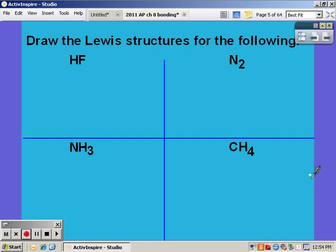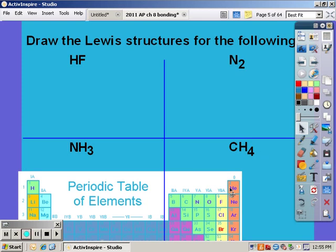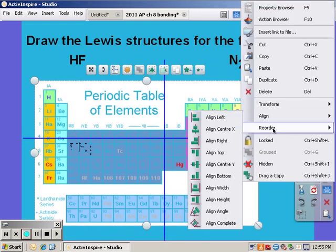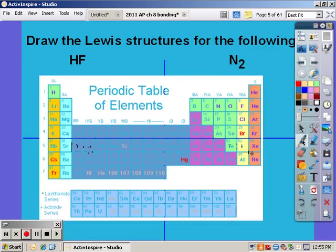So first we need to count up our valence electrons for HF. Hydrogen has one valence electron. We can get that from looking at the periodic table. It's in the first column which means that it has one valence electron. And then fluorine is in the seventh column if you count over one, two, three, four, five, six, seven, so it has seven valence electrons.